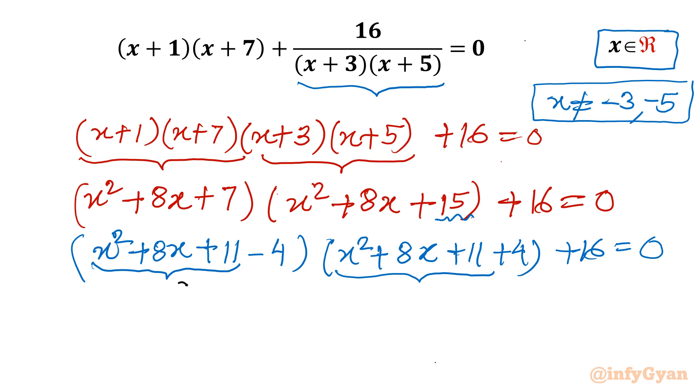Let me write here a minus b times a plus b. We know the formula, it is a square minus b square. So in place of a it is x square plus 8x plus 11. Let us write x square plus 8x plus 11 whole square. Now minus b square. In place of b it is 4, so I will write 4 square.